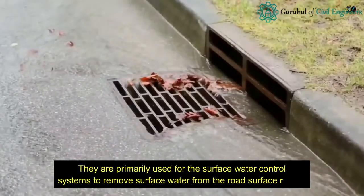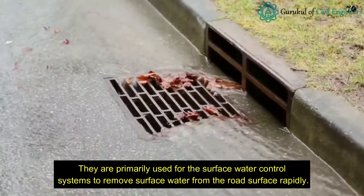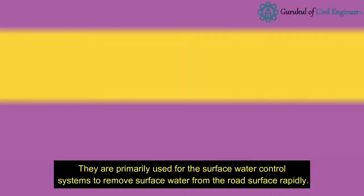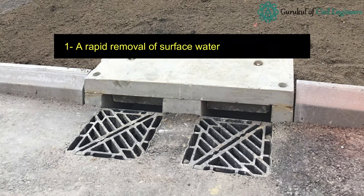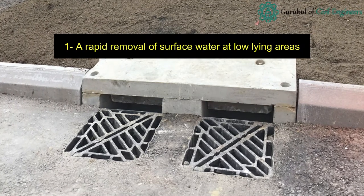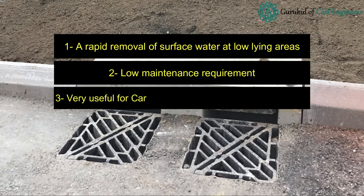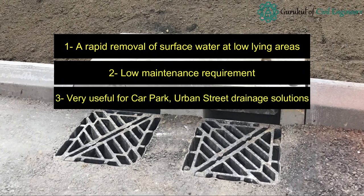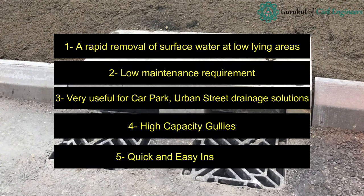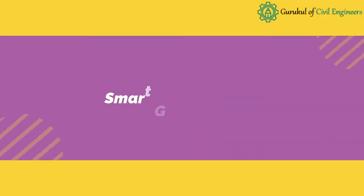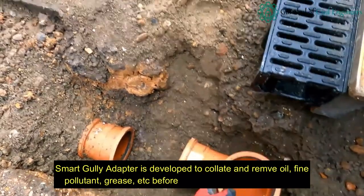Super gully: super gully is an innovative gully type for low-cost, low-frequency maintenance purposes. They are primarily used for surface water control systems to remove surface water from the road surface rapidly. Key benefits of super gully include rapid removal of surface water at low-lying areas, low maintenance requirement, and they are very useful for car park and urban street drainage solutions.